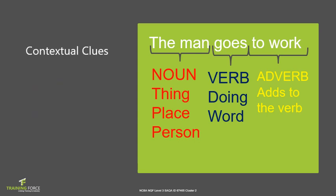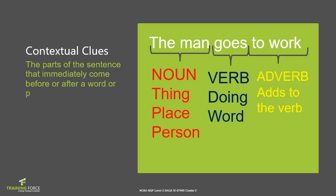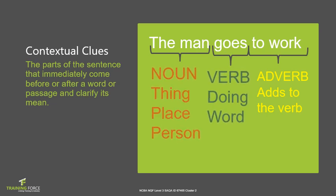When we look at contextual clues, these are the parts of the sentence that immediately come before or after a word or passage and clarify its meaning. So the verb 'goes' came after 'the man,' which tells us what the man is doing to clarify the meaning of the sentence. If we said 'goes to work the man,' we would need to reorganize the words to make sense.